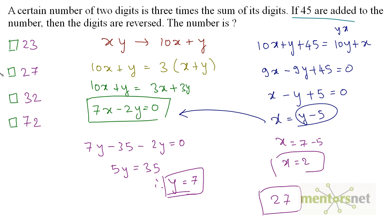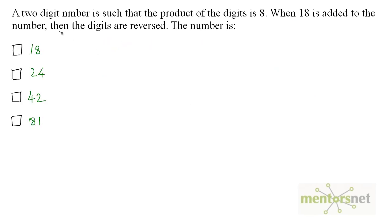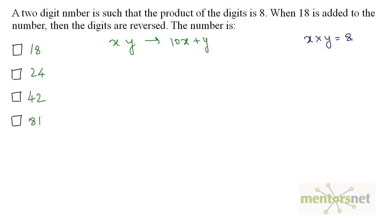The answer is option B, 27. Moving to the next question: a two-digit number has a product of digits equal to 8. When 18 is added to the number, the digits are reversed. The number has digits x and y with value 10x plus y. The product of the digits gives x times y equals 8.